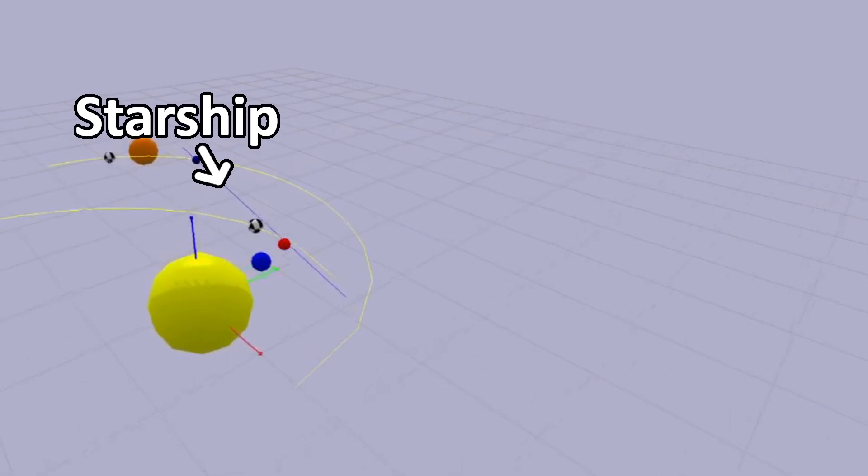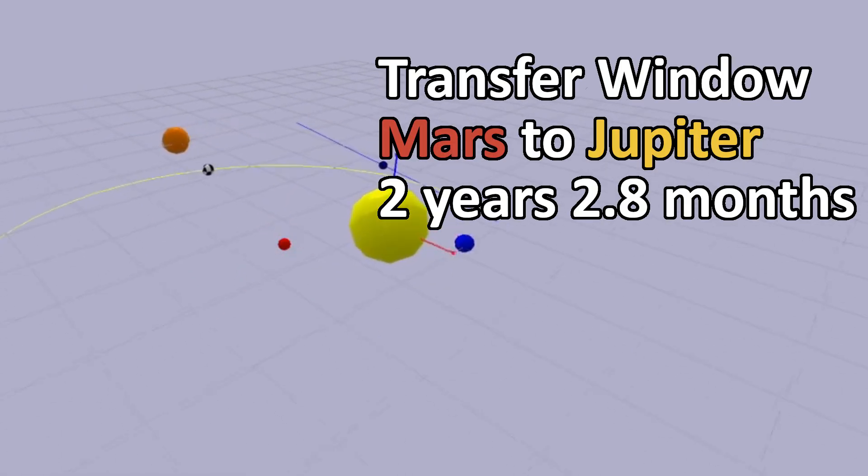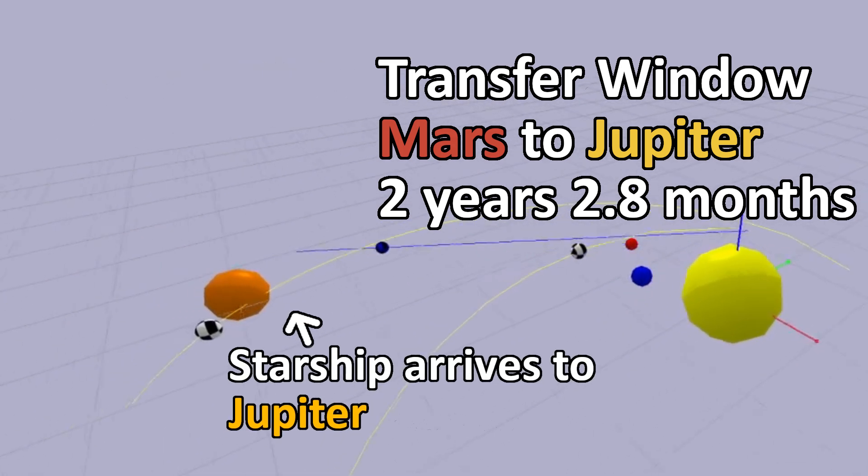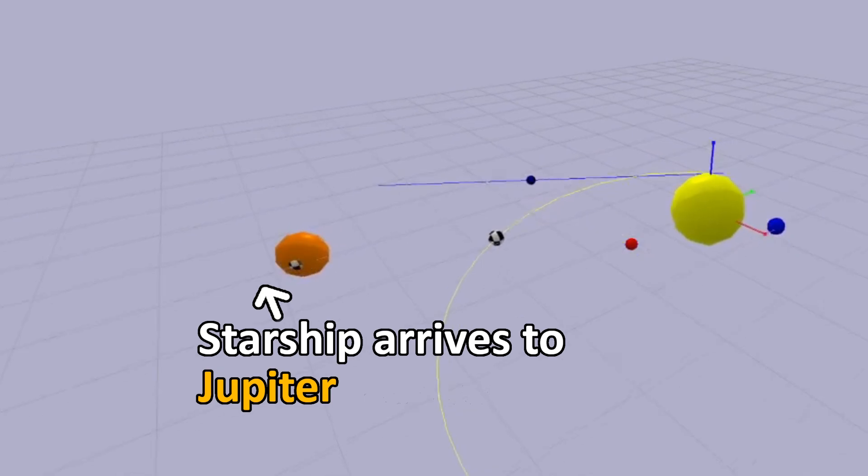Why do we see two yellow lines? Because the transfer window is every two years and three months. So we'll send a second Starship before the first one even arrives to Jupiter.